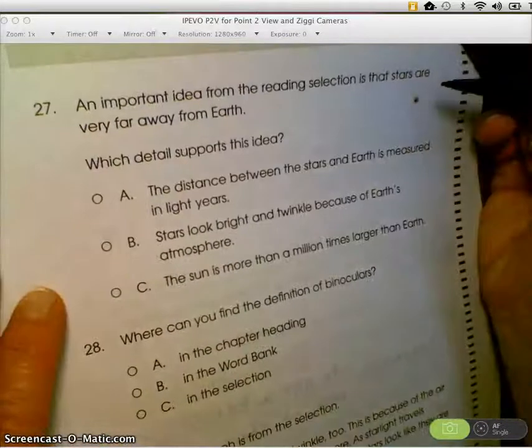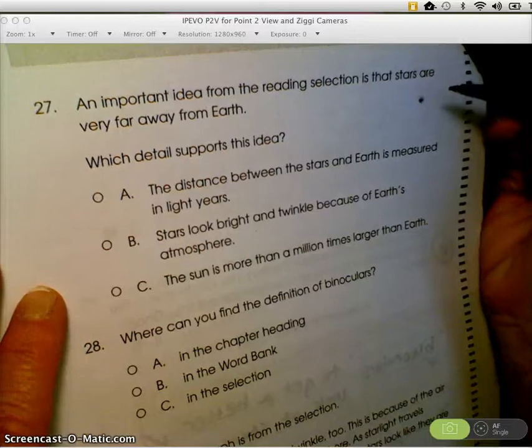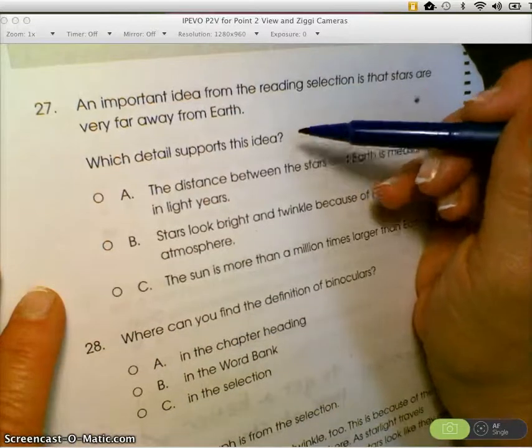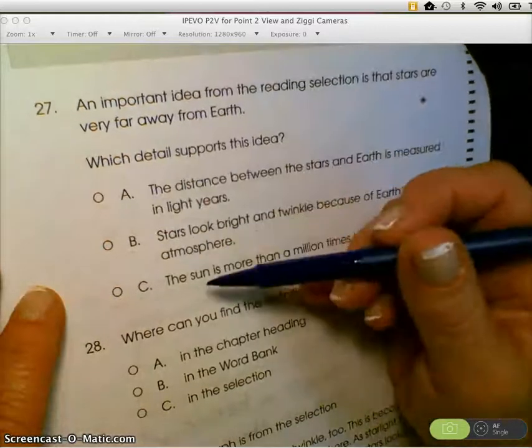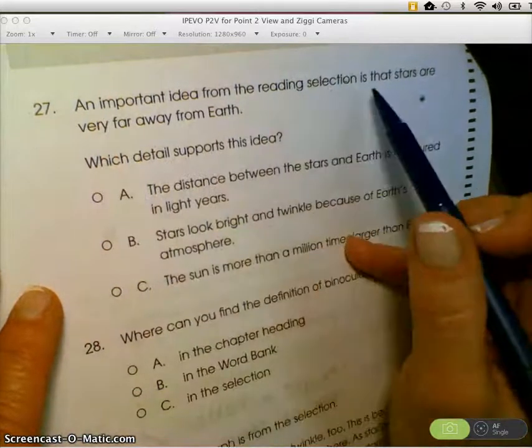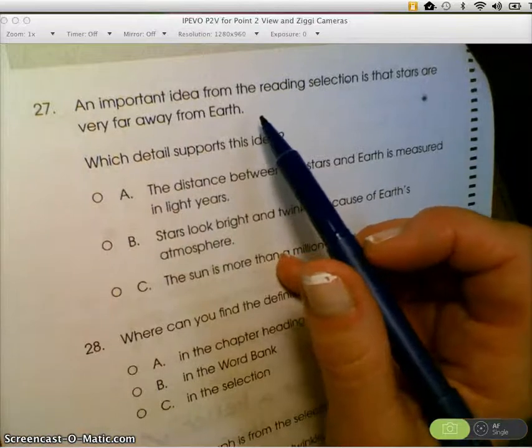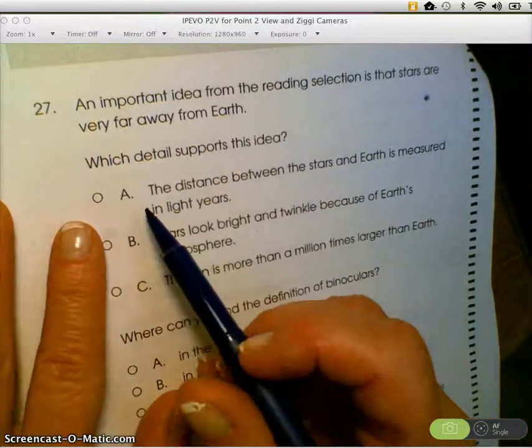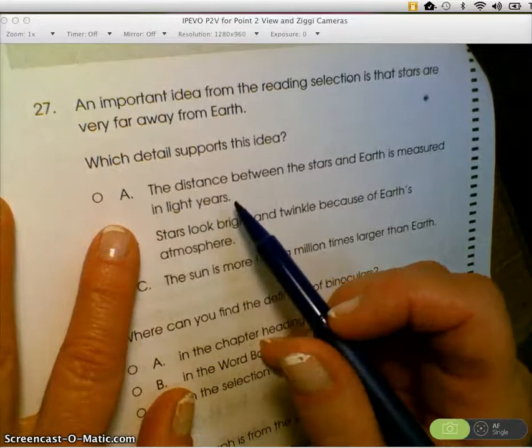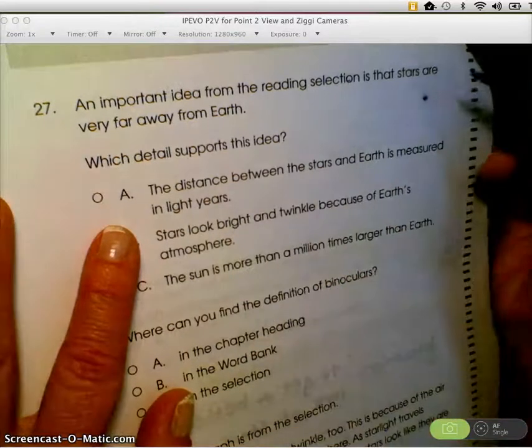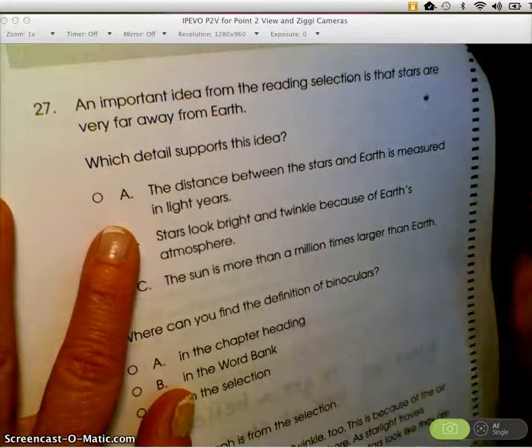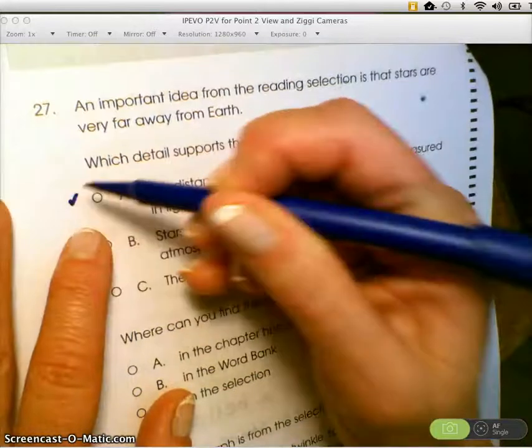An important idea from the reading selection is that stars are very far away from Earth. Which detail supports that idea? So you need the detail down here that goes with this. The part about stars are far from Earth. So what goes with that, stars are far from Earth? Would it be A, the distance between the stars and Earth is measured in light years? Does that work with stars are far from Earth? Yes, because they're measured in light years. I like that one, but I'm not going to mark it yet because I want to see if there's a better one.